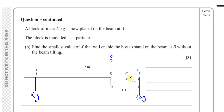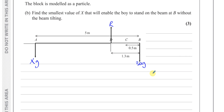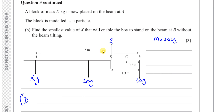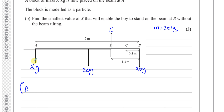The boy now stands at B with weight 30g newtons. We still have the reaction force at D. We want the smallest value of x, so again it's on the point of tilting — it's about to lift off, meaning there is no reaction in that region. The only reaction force is at the pivot D. We also still have the weight of the beam, which is now known to be 20 kilograms, so 20g newtons acting at the midpoint.